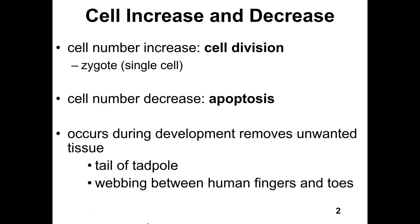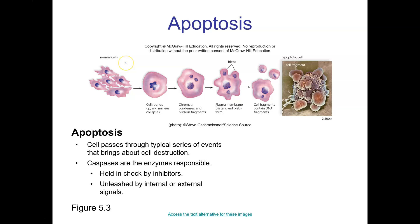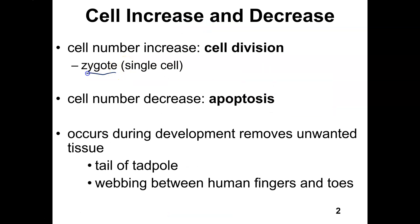All animals start as a single cell. That single cell — all humans — start as a zygote. A zygote forms when sperm and egg come together.